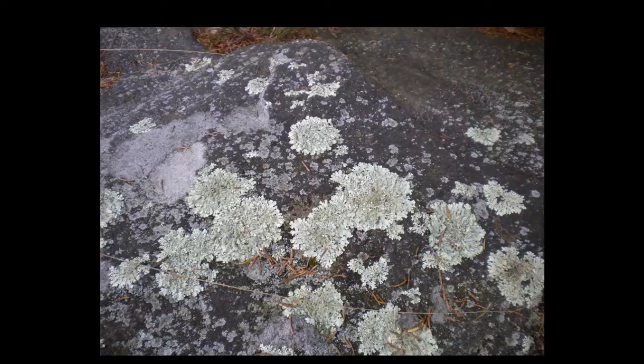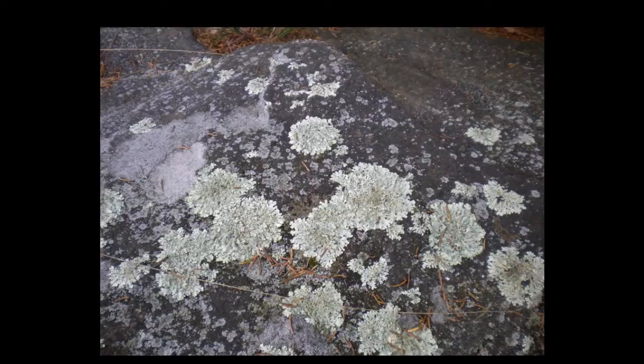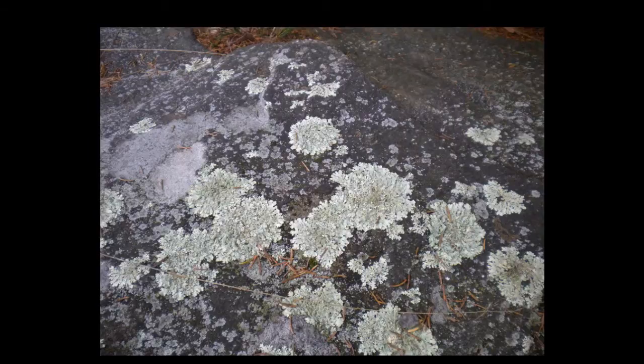Lichen is mad gangster. Lichen can grow on rocks, doesn't need any soil, and can survive anywhere from the tundra to the desert. Lichen isn't just one organism — it's a symbiotic relationship between a fungus and usually an algae or bacteria that can photosynthesize. The fungi will attach to the rocks, and the algae or bacteria will photosynthesize to produce energy.